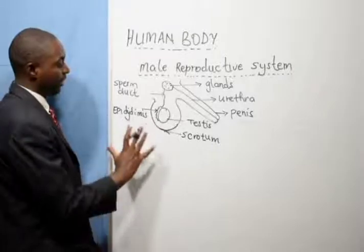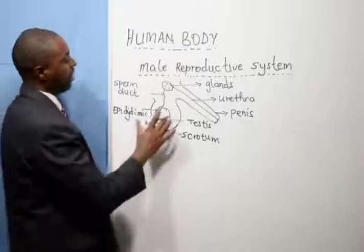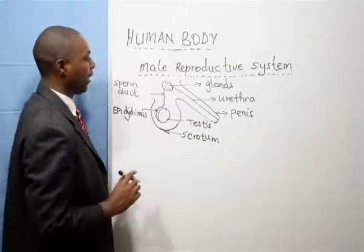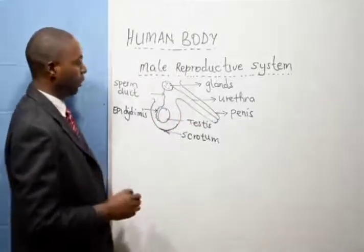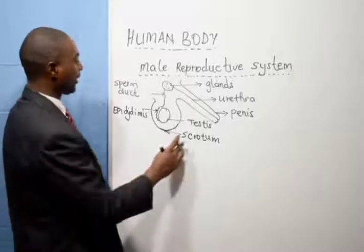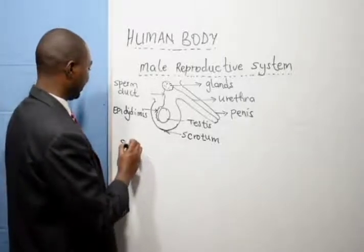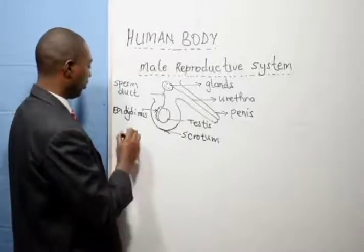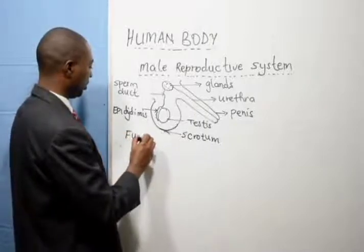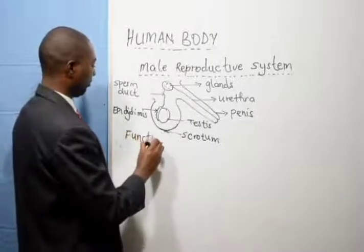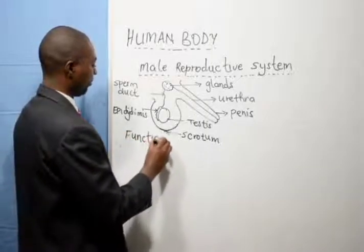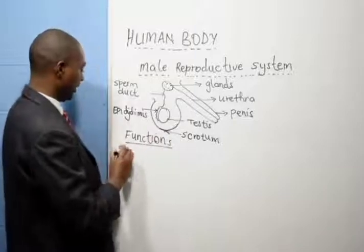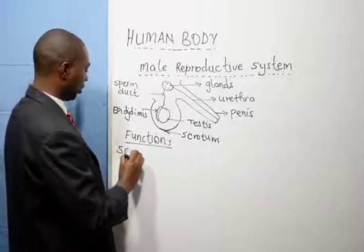After that, these parts are the external parts — they are visible. So let us look at one part at a time. Let us look at the functions of every part. To start with, let us start with the scrotum.